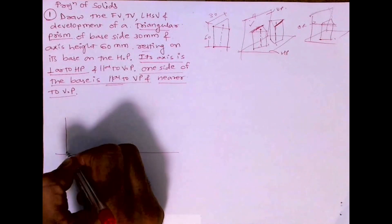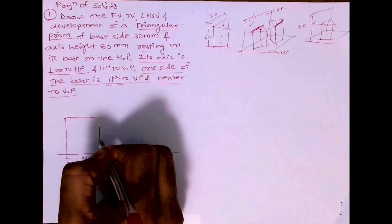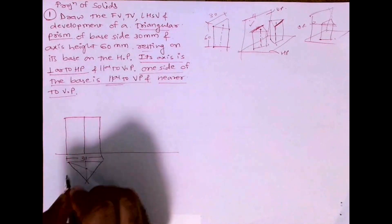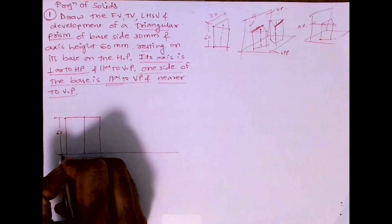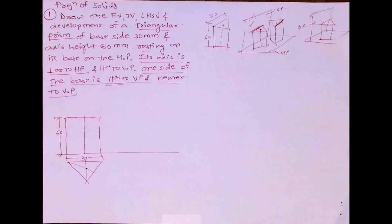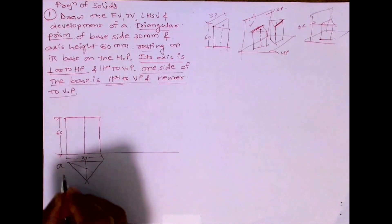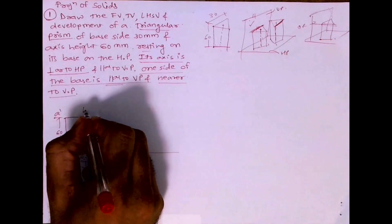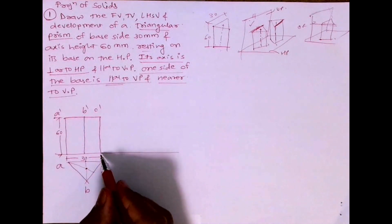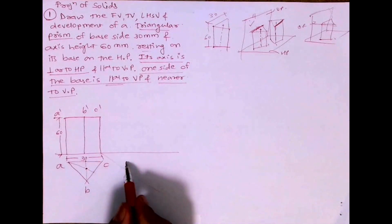This is 30. This way it will come. This is height 60, so we are done with front view, top view. This is A B C, this is A dash B dash C dash, then you draw 45 degree.